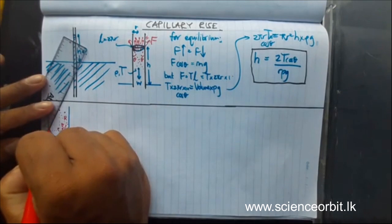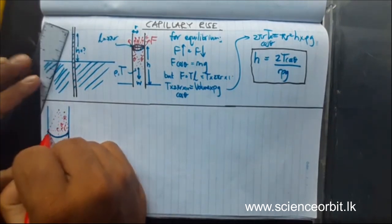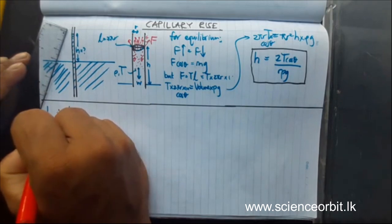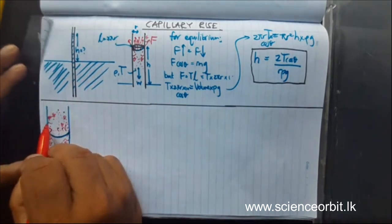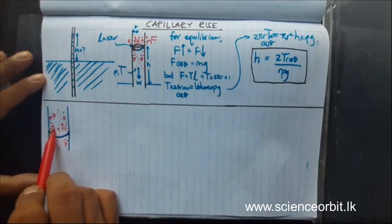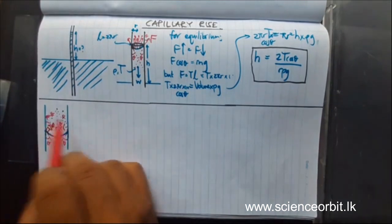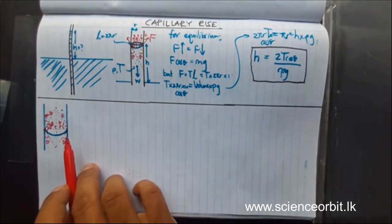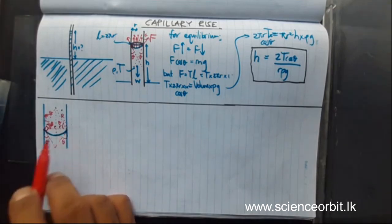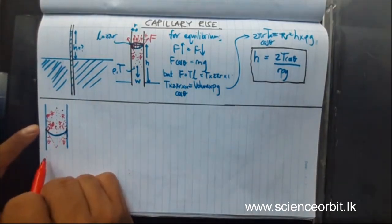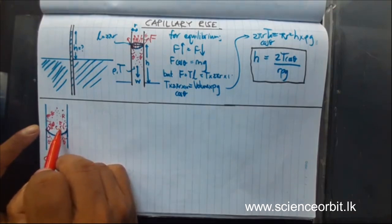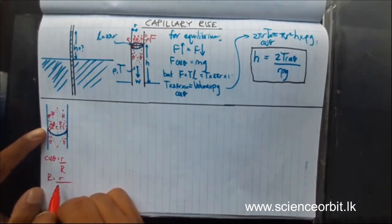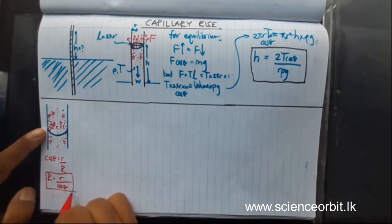The relationship between capital R and simple r is: cos theta equals adjacent over hypotenuse, which is simple r over capital R. So capital R equals simple r divided by cos theta. We will use this relationship later. Our purpose is finding an equation for H, and I will take four points — A, B, C, and D — to derive this equation using a different method.